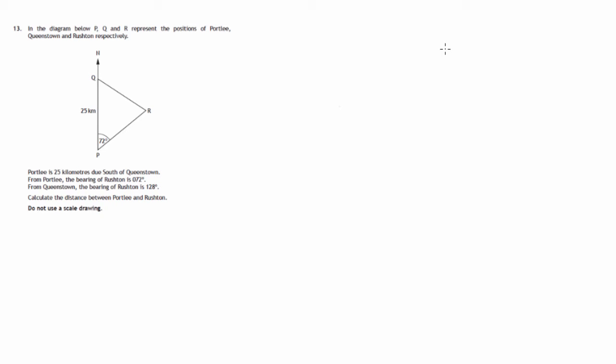This is question 13 from paper 2 of the 2015 National 5 SQA Maths exam. We're given a diagram that shows the position of three places, P, Q and R. We're told that P is directly south of Q, 25 kilometers.